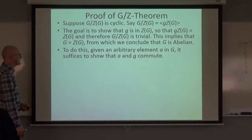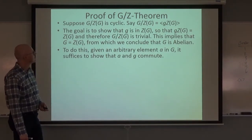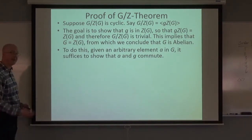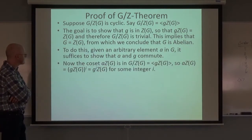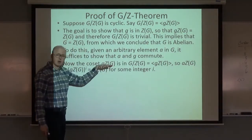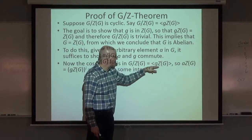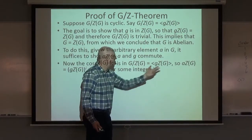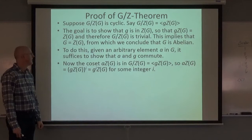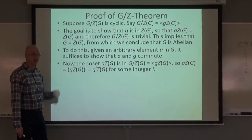Given an arbitrary element a in G, it suffices to show that a and g commute. Consider the left coset a·Z(G) in the factor group, which is generated by g·Z(G). Since the factor group is cyclic, a·Z(G) must be some power of g·Z(G) — there's some integer i such that a·Z(G) equals (g·Z(G))^i.